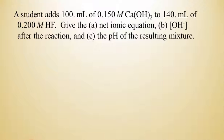In this case, we're going to have a student that adds 100 milliliters of 0.150 molar calcium hydroxide to 140 milliliters of 0.20 molar hydrofluoric acid. So we're going to give the net ionic equation. Once again, we want to remember that every strong base is represented as hydroxide ions. We're not going to worry about the calcium ion there. That's a spectator. And we're going to add that to HF. So here is the net ionic equation. Of course, the products are the conjugate base, fluoride, and water, which is the conjugate acid of hydroxide.